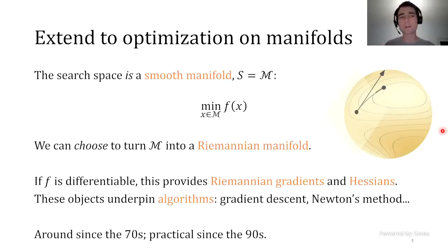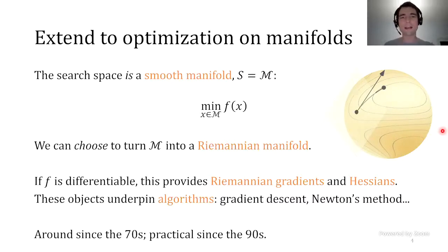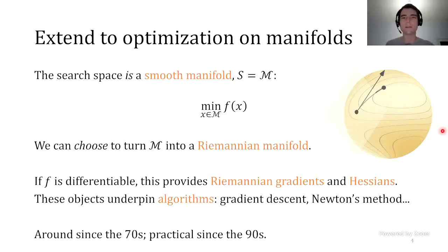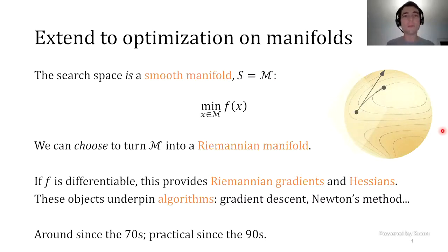The reason is that the manifolds that come up in applications oftentimes are sets of matrices. The geometric tools that you need to compute end up oftentimes being formulated as matrix factorizations and other things of that sort. So we're going to redo everything from Euclidean space, but do it now on Riemannian manifolds. In order to make this a bit more clear, I do want to take some time to tell you what exactly is a manifold, bearing in mind that many of you may already be comfortable with the notion, but let's all get on the same page.